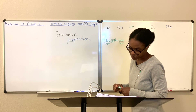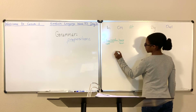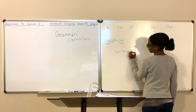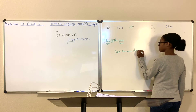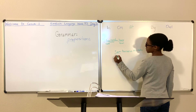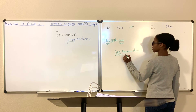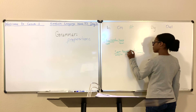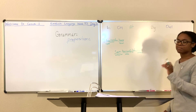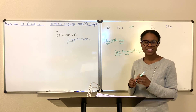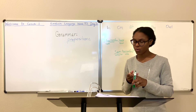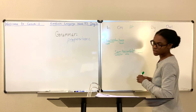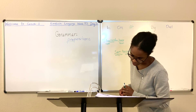Let's try 'on.' Sam turned on the radio. Sam is the subject, 'turned' is the verb, and 'the radio' is another noun — but the word 'on' is the preposition. It tells you one of four things: direction, location, time, or introduces an object. Now let's try 'at.' Tim is at home.